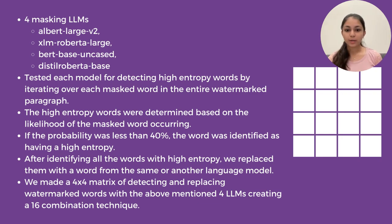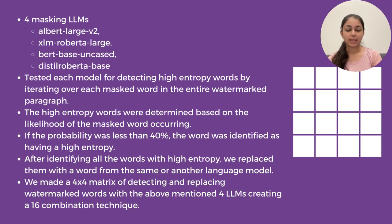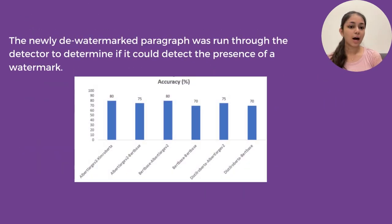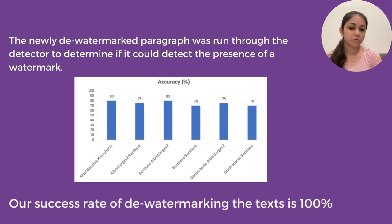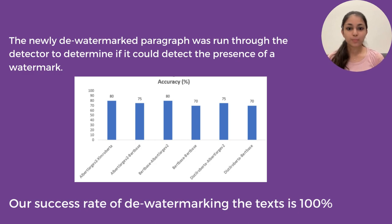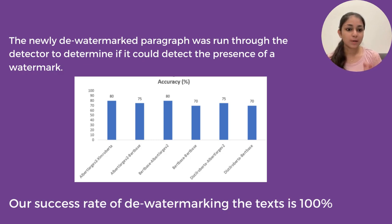After identifying all high entropy words, we replaced them with a word from the same or another language model. We created a 4x4 matrix for each of the four masking models, yielding 16 combinations to test which LLMs can detect the watermarks of other LLMs. After replacing the watermarked tokens, we ran the de-watermarked paragraph through the detector. Not all 16 combinations worked; however, at least one combination for each case successfully de-watermarked the text, and we therefore claim a 100% success rate.